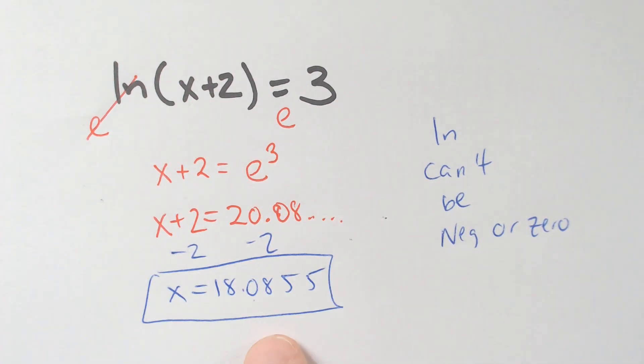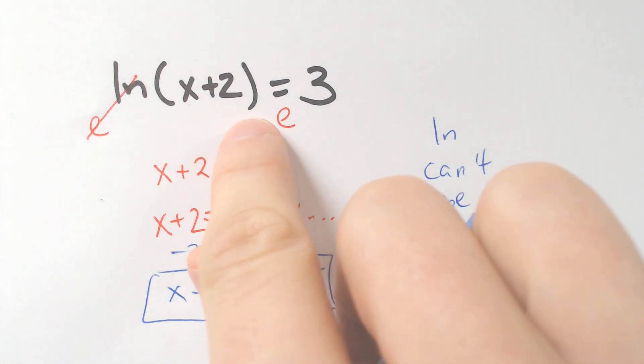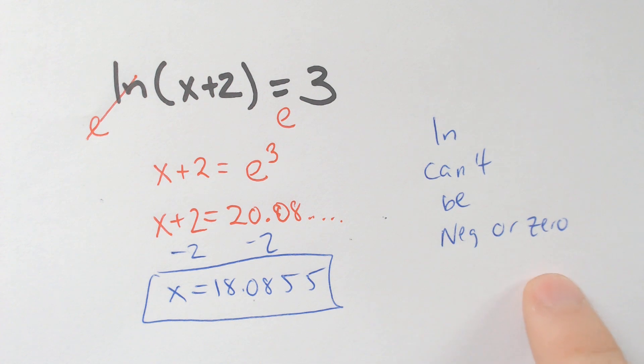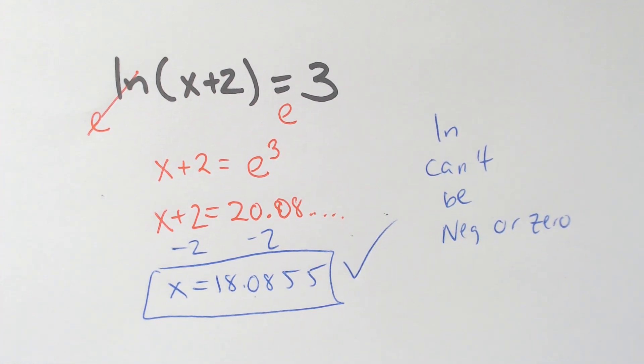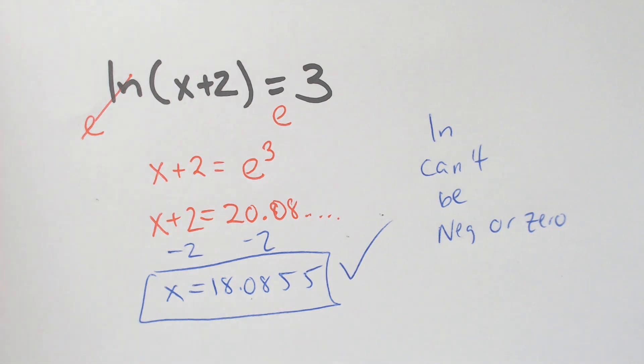So if you plug in 18.05, plus 2 is 20, that is not negative or zero, so this one works out, okay? So you just have to really quickly just plug it in and make sure that the LN is not going to be negative or zero.